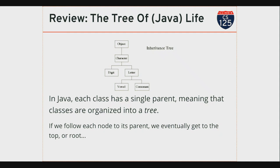As we go up the tree, things get more general. Object is supposed to only contain capabilities that Java wants every single object in the type system to have. For example, toString is provided by Object — it's useful to be able to print any type of Java object for debugging and other purposes. There are a couple of other methods we also inherit from capital-O Object, like equality: every class is expected to have some notion of what it means for two instances to be equal. As we go down the tree, things are getting more specific, breaking into smaller and smaller categories.